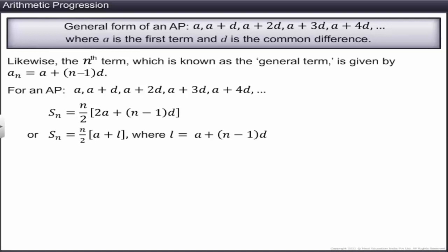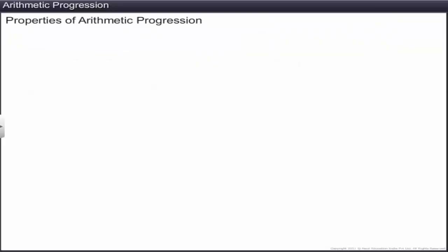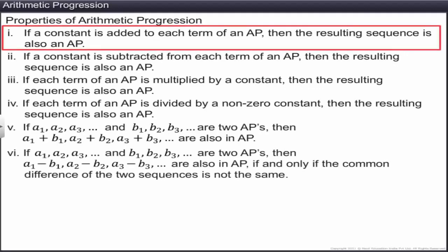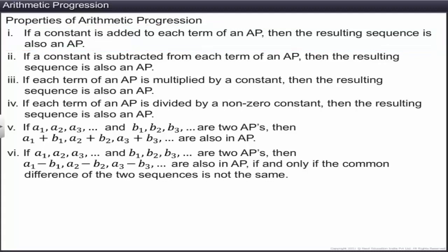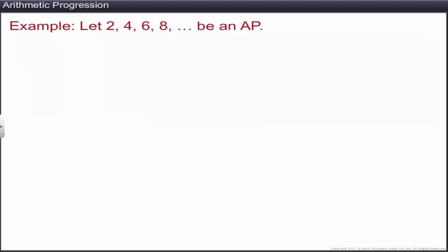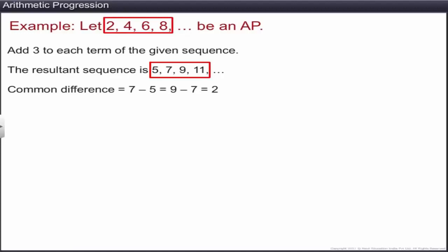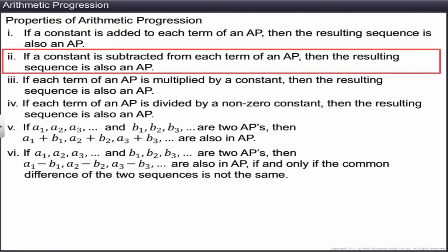Let us verify some properties of an arithmetic progression. First, if a constant is added to each term of an AP, the resulting sequence is also an AP with the same common difference. For example, adding 3 to each term of 2, 4, 6, 8, … gives 5, 7, 9, 11, …, which is an AP with first term 5 and common difference 2. Similarly, if a constant is subtracted from each term of an AP, the resulting sequence is also an AP.